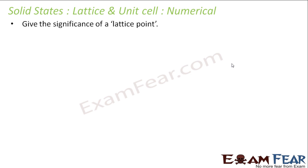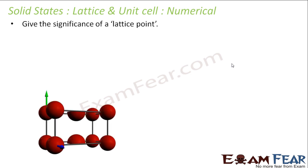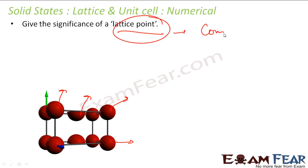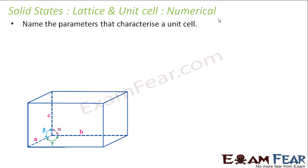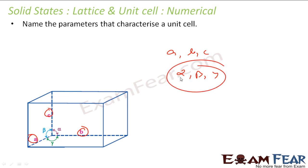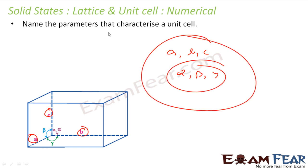Let's take some numericals. The first question is: what is the significance of a lattice point? Each lattice point represents constituent particles — these are all lattice points. Each lattice point represents my constituent particles, which can be atoms, ions, or molecules. The next question is: name the parameters that characterize unit cells. A unit cell has parameters A, B, and C — the lengths of the edges — and alpha, beta, gamma — the angles. These are the ones which characterize the unit cell shape. Based on A, B, C and alpha, beta, gamma we have seven different kinds of unit cells: monoclinic, hexagonal, tetrahedral, and so on.